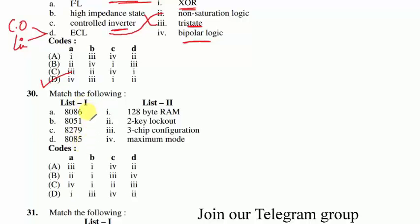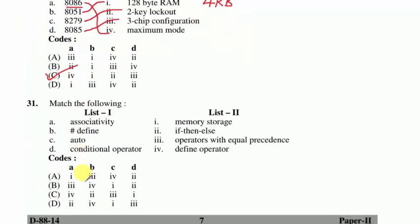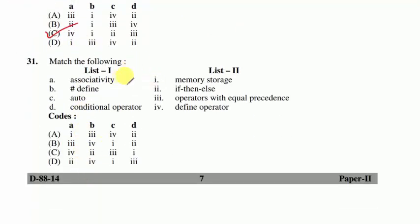Question 30: 8086 is a microprocessor (minimum and maximum mode). 8051 microcontroller has 128-byte RAM and 4 KB ROM. 8279 is a 2-key lockout device; 8085 is a 3-chip configuration. Suitable option C is correct.